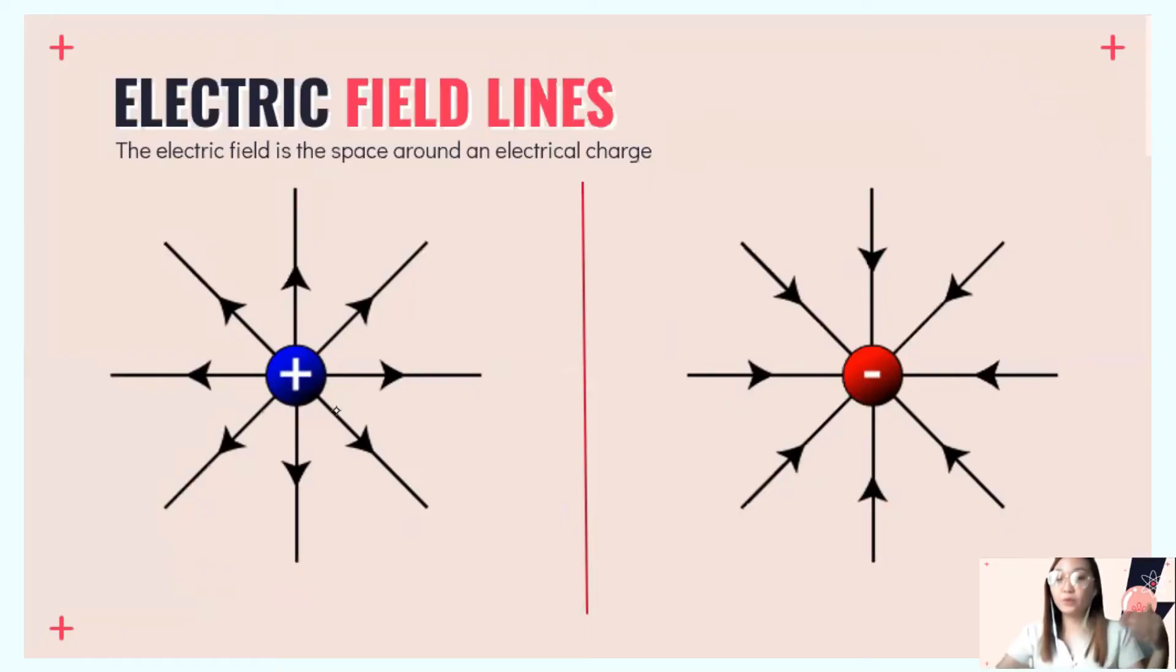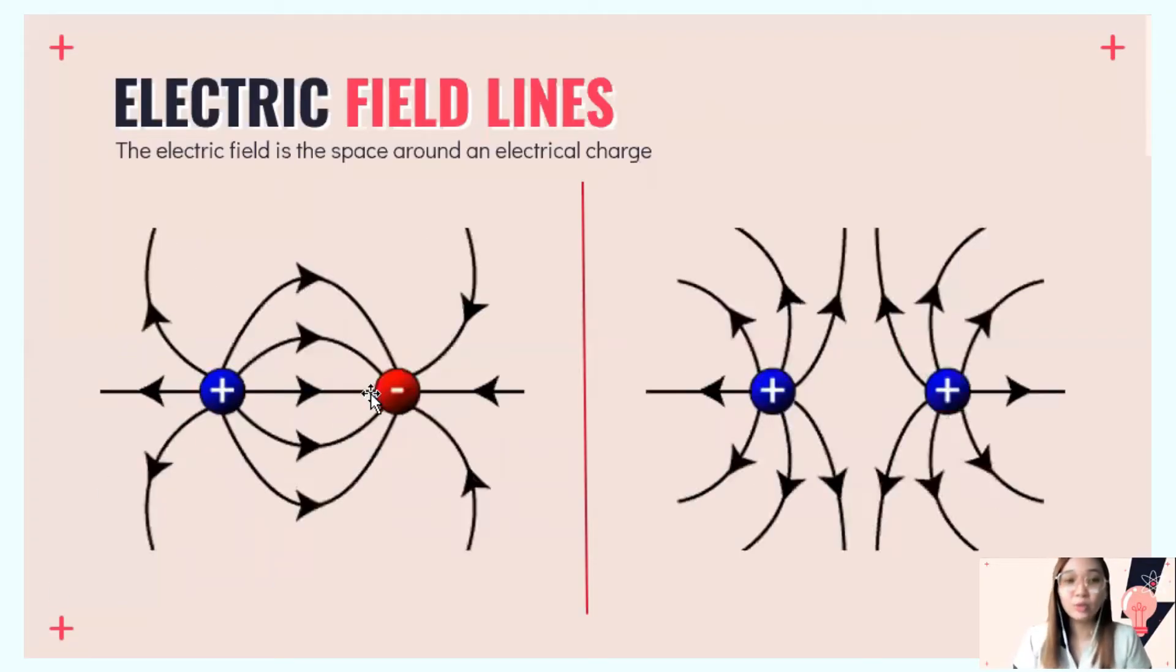When two charges interact, unlike or opposite charges attract. What happens to their field lines? They look like this: positive and negative attract each other, and the field lines combine. In this way, we have an electric dipole.